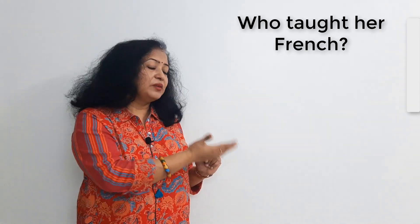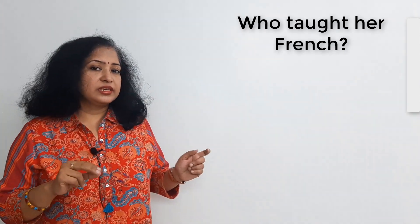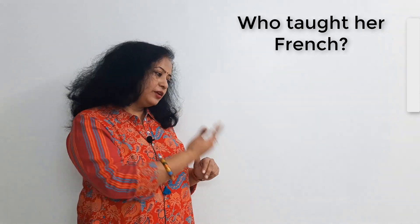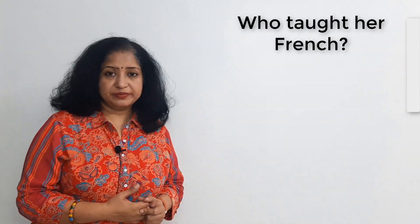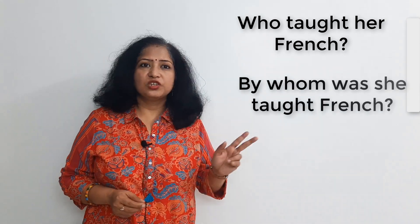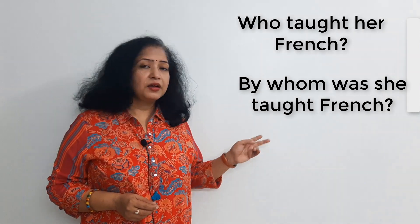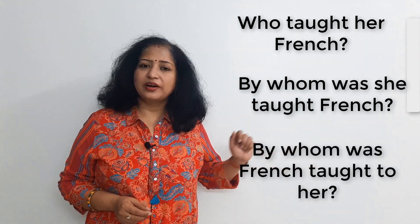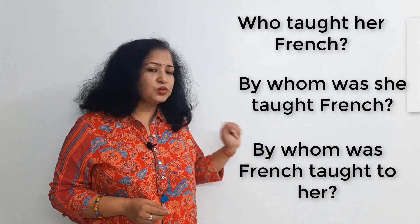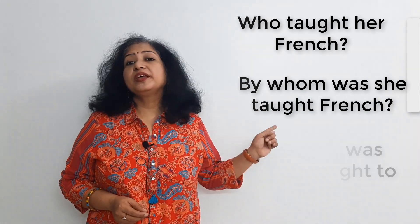Next example: 'Who taught her French?' As I discussed in my first part, some sentences have two objects — direct object and indirect object. Here the objects are 'her' and 'French.' When converting to passive, you can take any of the two objects as the subject. So: 'By whom was she taught French?' — here 'she' is the subject. Or: 'By whom was French taught to her?' — here 'French' is made the subject.